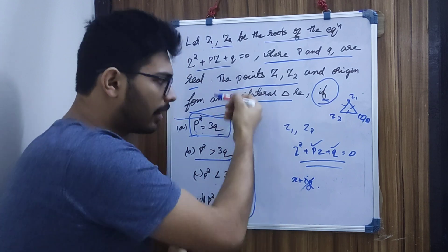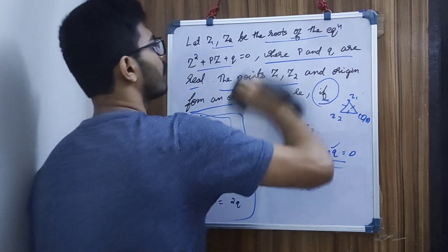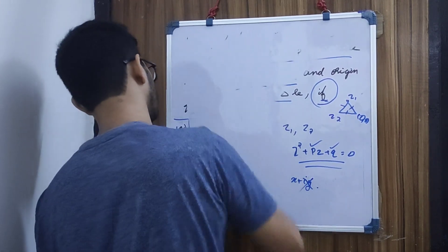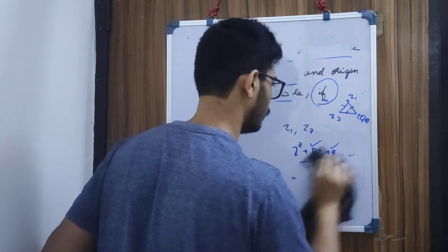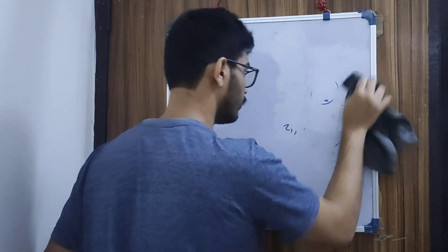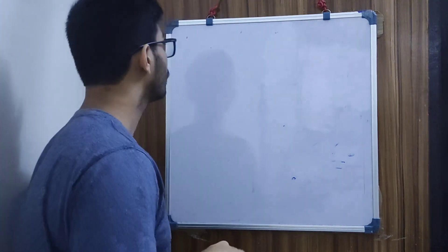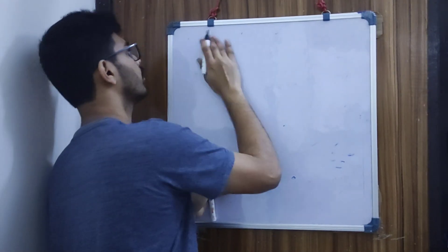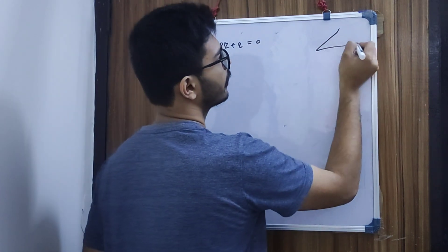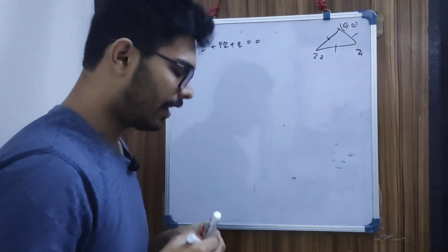We have the options: p² equals q, and p² greater than q. The equation is z² + pz + q = 0. We have the conditions for z1 and z2, and we need to identify three conditions from this quadratic equation.